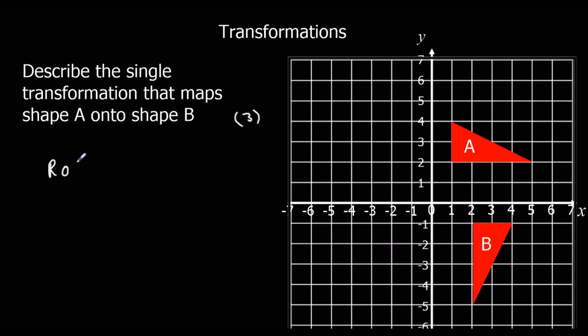So it's a rotation from A to B. How many degrees and which direction? It's 90 degrees clockwise. And what's the centre? So the centre is, in this case, zero, zero, the origin.